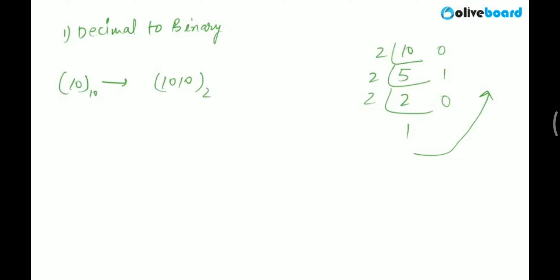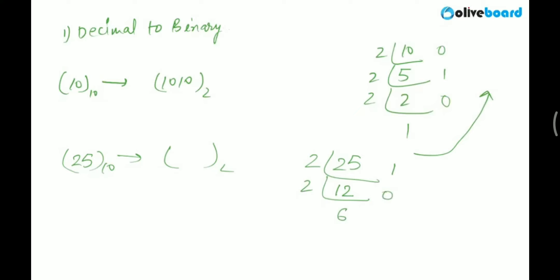Let's do another example. We want to convert 25 from decimal to binary using the same technique — dividing by 2. 25 divided by 2 is 12 with remainder 1. 12 divided by 2 is 6 with remainder 0. 6 divided by 2 is 3 with remainder 0. 3 divided by 2 is 1 with remainder 1. Arranging the remainders from bottom to top, we get 11001. So 11001 is the binary of 25.